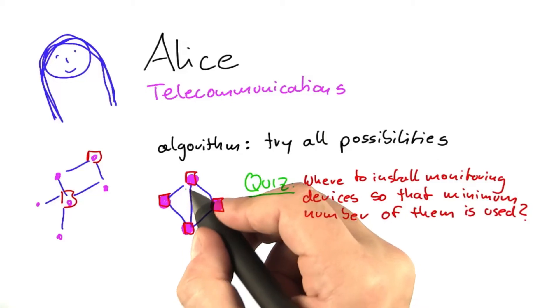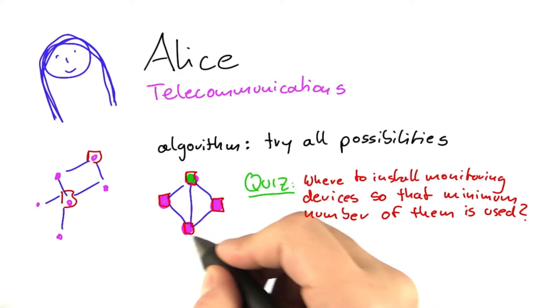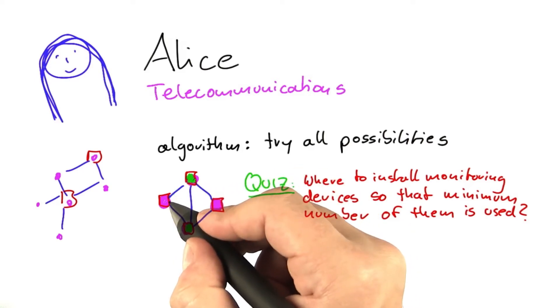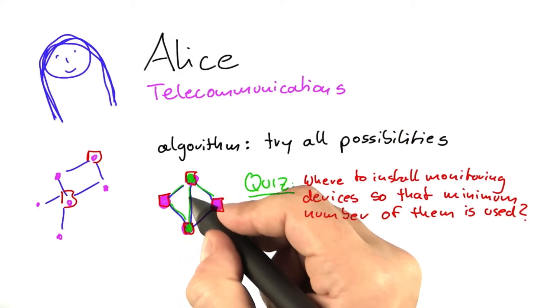And the answer to that is that we only need to install two devices, one up here and one down here. This one up here covers those three cables, and this one down here covers these three here.